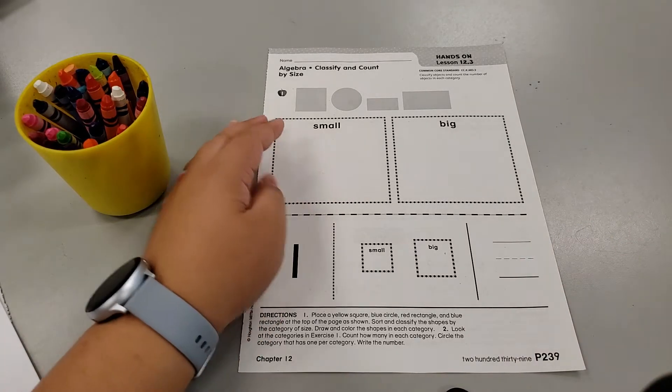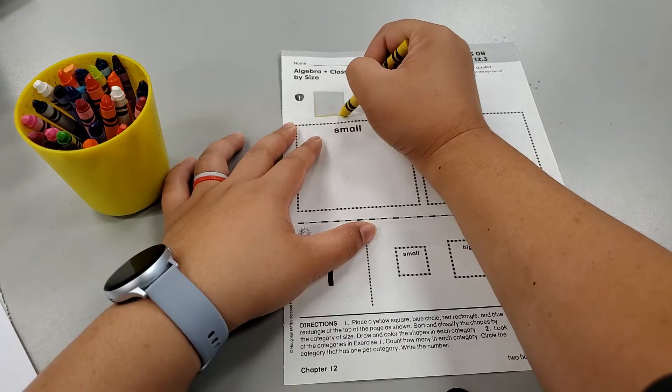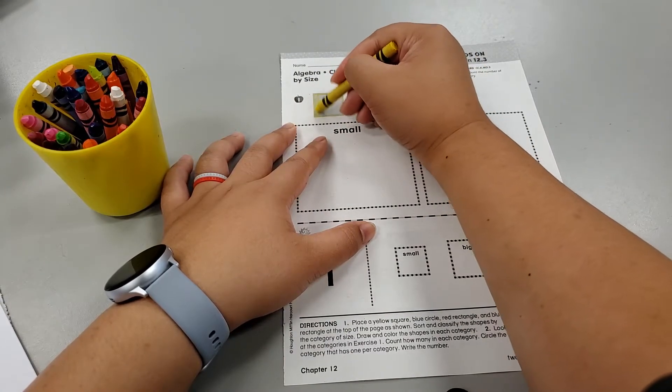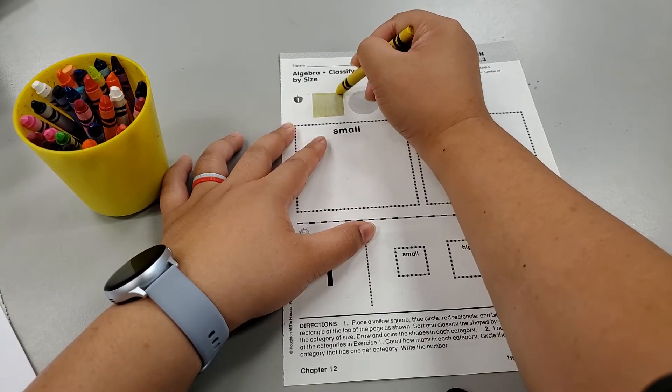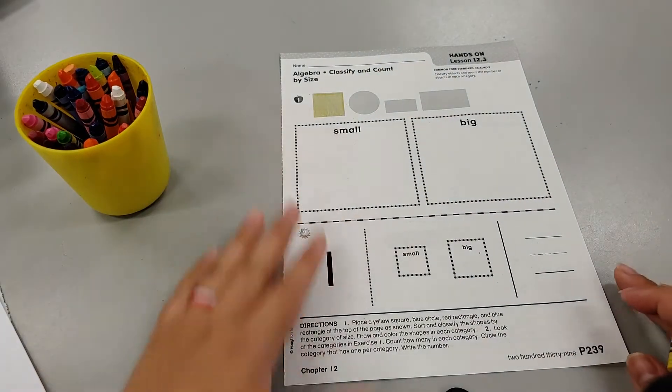First one, we need a yellow square. So let's go ahead and color this yellow square in. Then Mrs. Grosby's strategy for coloring is to make the lines on the outside so they act like a barrier to stop her from coloring outside the lines when she does the middle.